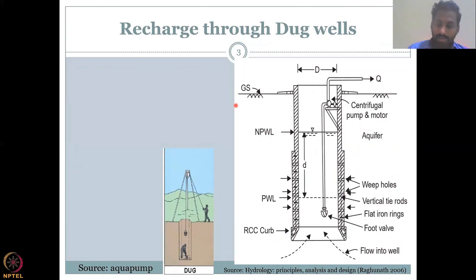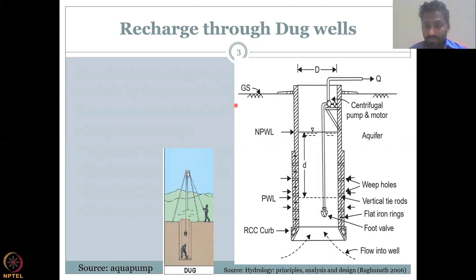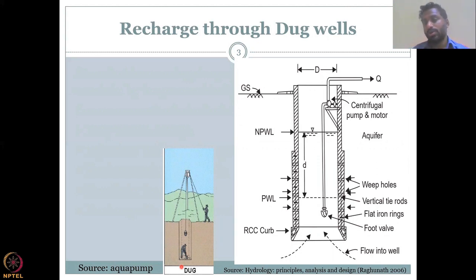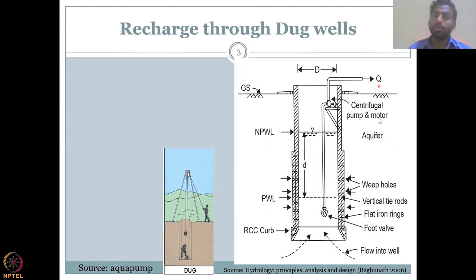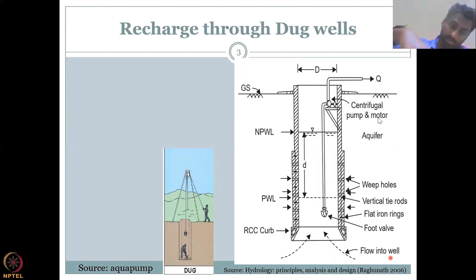Let's start with recharge through dug wells. A dug well is a type of well in the shallow aquifer, mostly dug by hand or by small instruments — no big machinery involved. If you look at the diagram, a man is digging with a spade and a person on top is pulling the debris out. A lot of rural wells are made this way. There is always recharge happening — groundwater recharges into the wells and then you access the water out. But the reverse can also happen: you can put water into these wells and the wells can recharge groundwater.